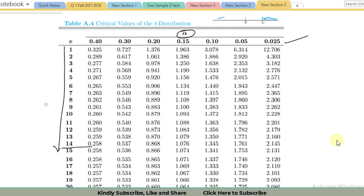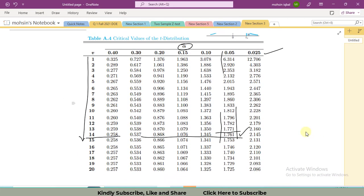We are interested in 14 degrees of freedom as well as 0.05. So in the column, if we move towards the row and we will see here column 0.05, we got 1.716 this value. We will use this value in our analysis.